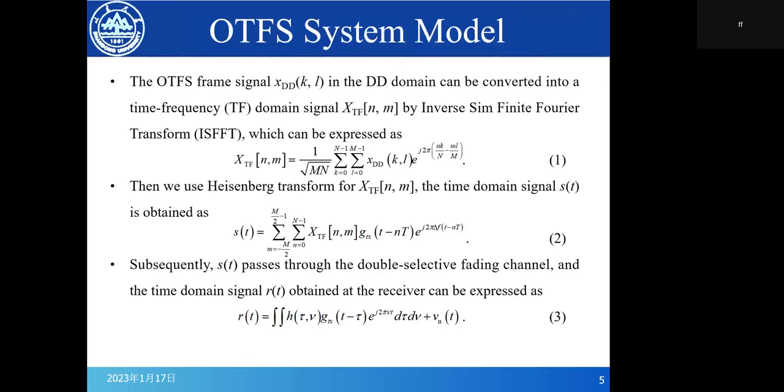The OTFS frame signal x_DD(k,l) in the DD domain can be converted into a time-frequency domain signal x_TF(n,m) by Inverse Symplectic Finite Fourier Transform (ISFFT), which can be expressed as equation 1. Then we use Heisenberg transform for x_TF(n,m). The time-domain signal s(t) is obtained as equation 2. Subsequently, s(t) passes through the double-selective fading channel, and the time-domain signal r(t) obtained at the receiver can be expressed as equation 3. This is the basic process operation of OTFS transmitter.